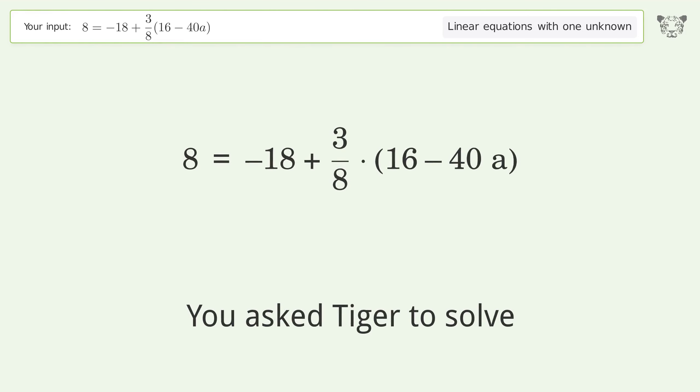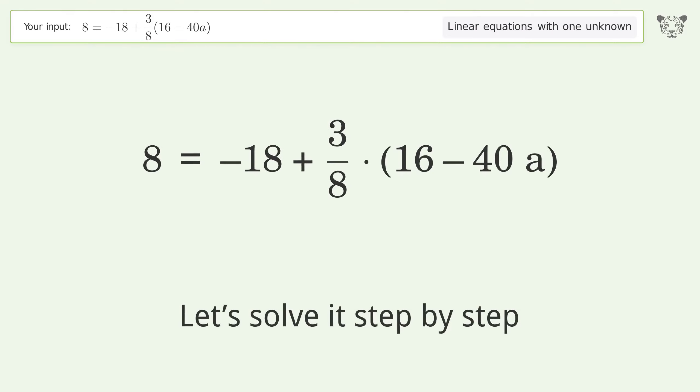You asked to solve this. It deals with linear equations with one unknown. The final result is a equals negative 4 over 3. Let's solve it step by step.